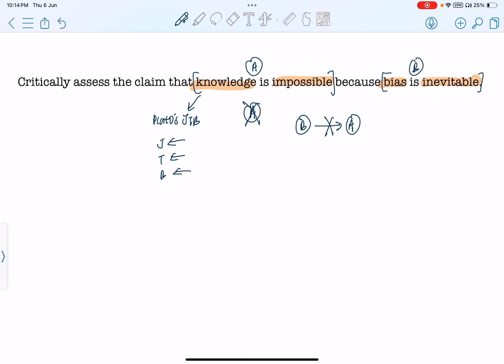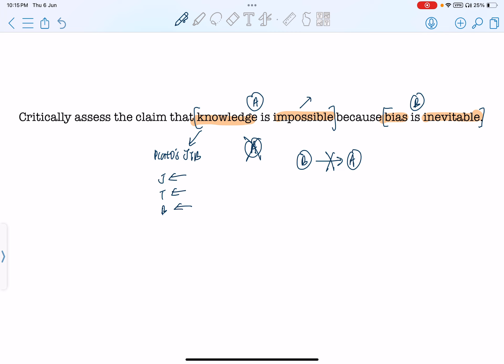So we don't need to come up with a really complicated definition of knowledge. And then it makes it hard to prove things that you want to prove in your response. Okay, so the second keyword is impossible. What does impossible mean? In relation to knowledge, it simply suggests that we cannot have knowledge. We cannot have knowledge because there is bias. And let's look at the idea of bias now. So the third keyword. What is bias?